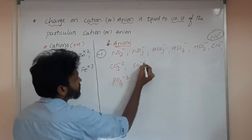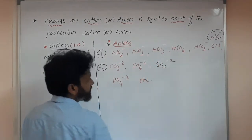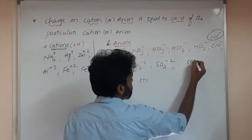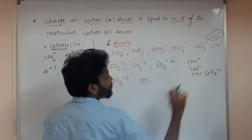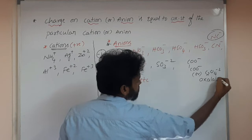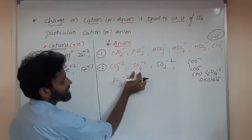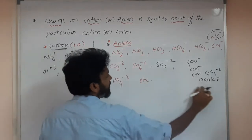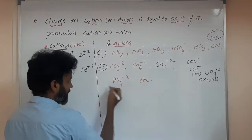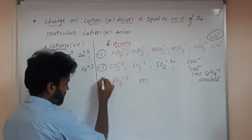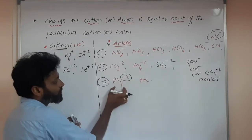Anions with minus two charge include: CO₃²⁻ (carbonate), SO₄²⁻ (sulfate), SO₃²⁻ (sulfite), and C₂O₄²⁻ (oxalate). Oxalate is written as two COO⁻ groups, simply C₂O₄²⁻. Phosphate PO₄³⁻ has a minus three charge. The charge on these groups is equal to the oxidation state of the entire group.